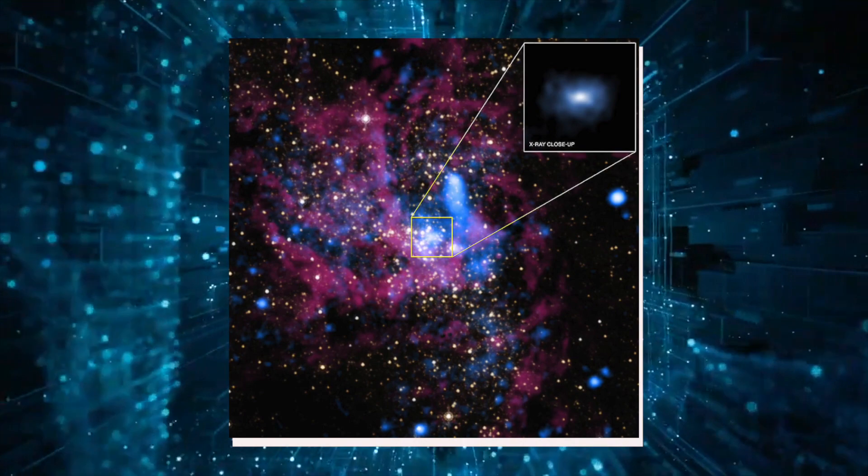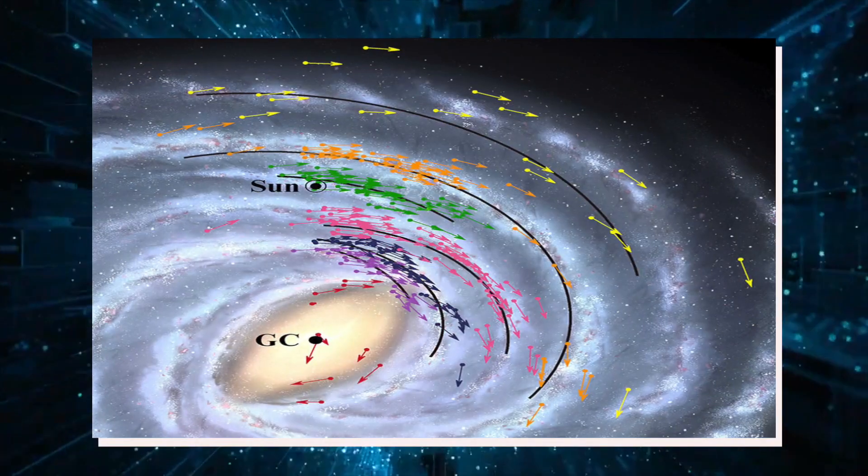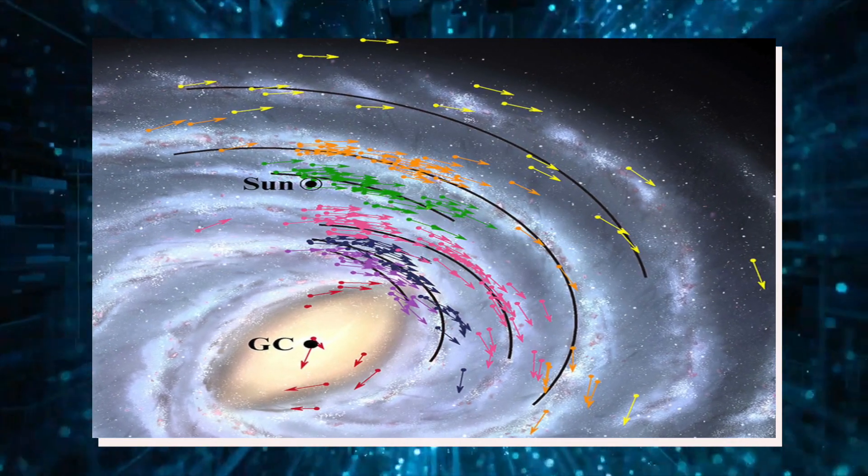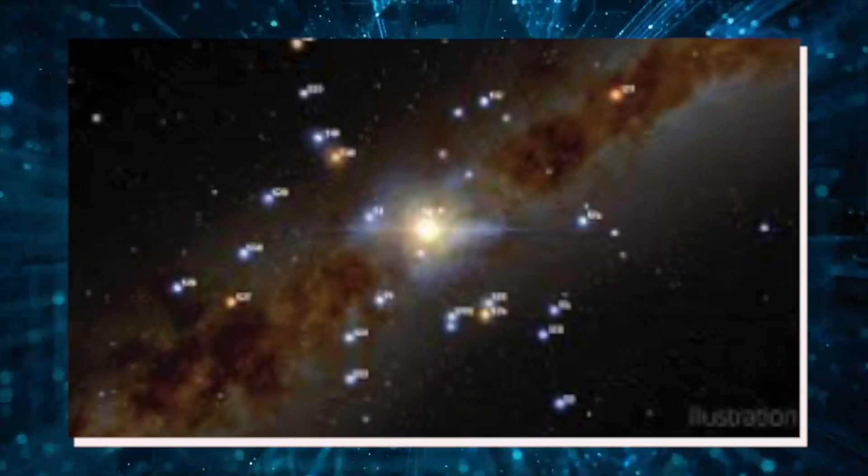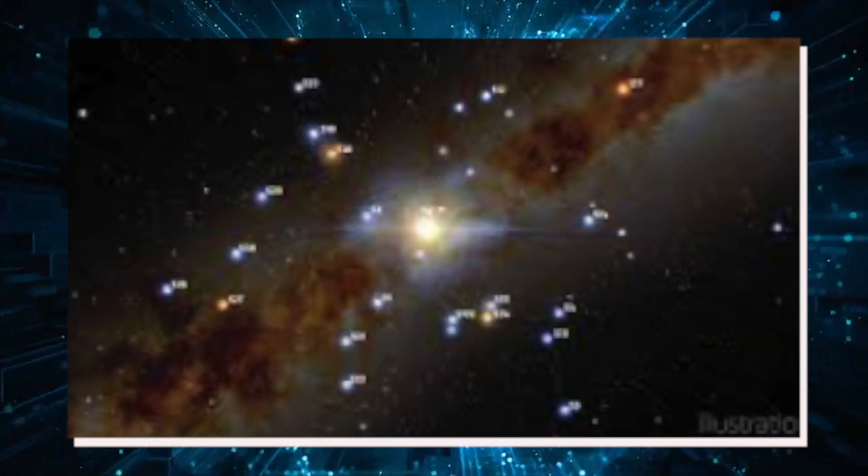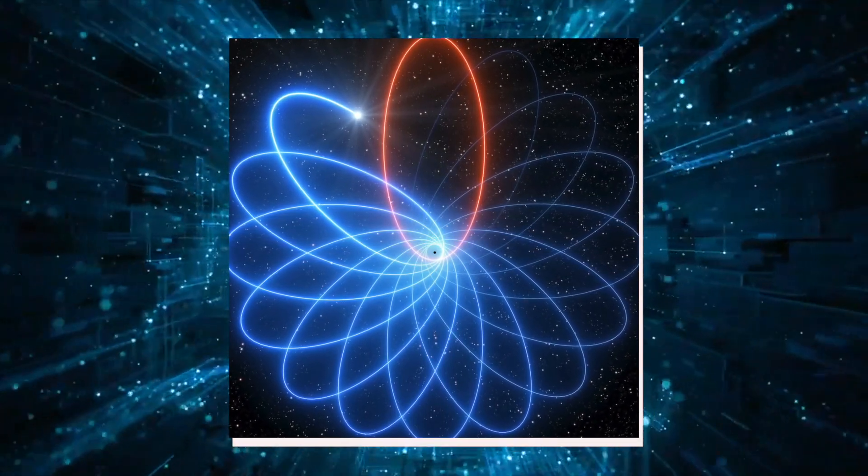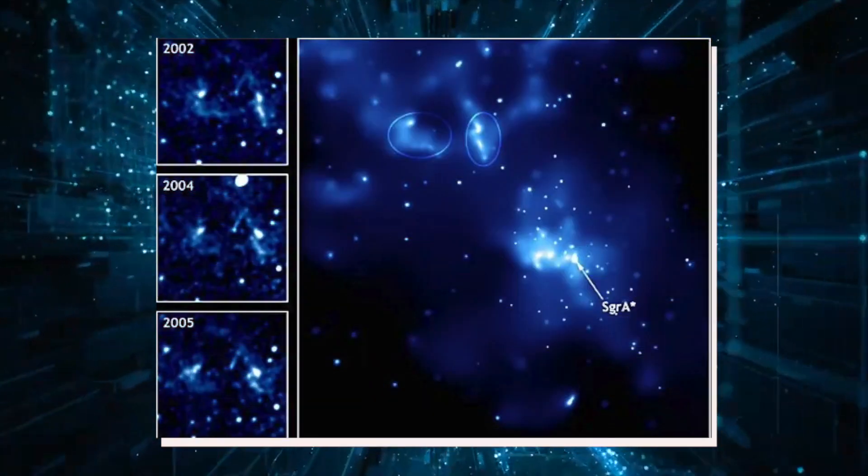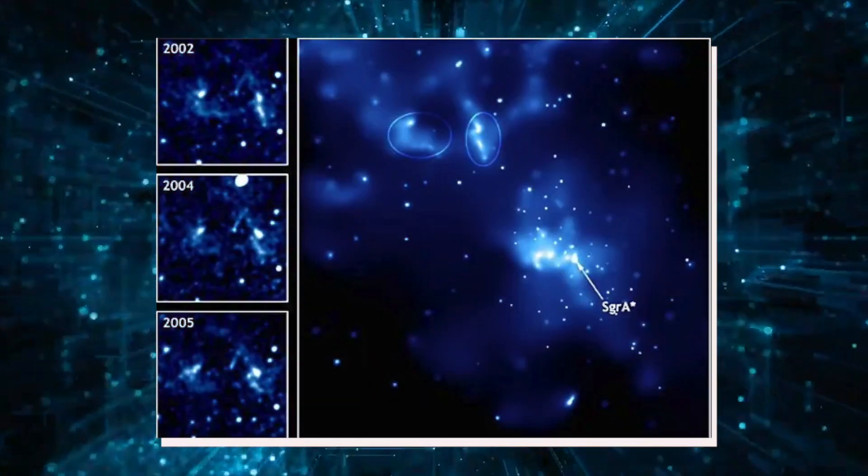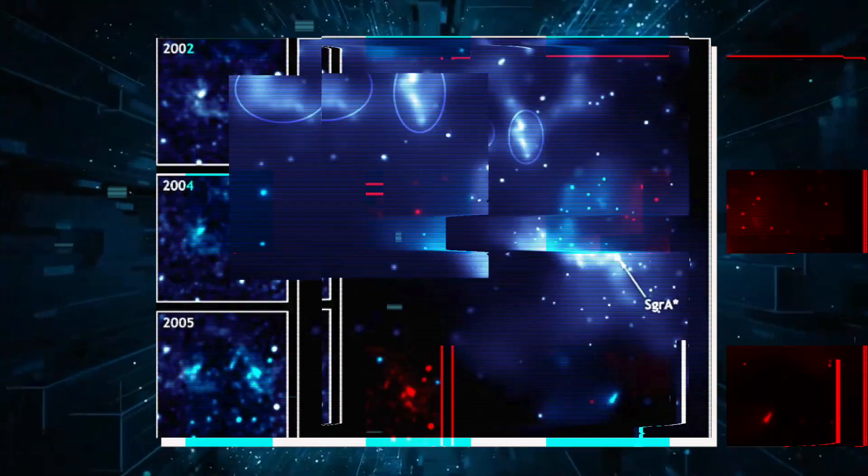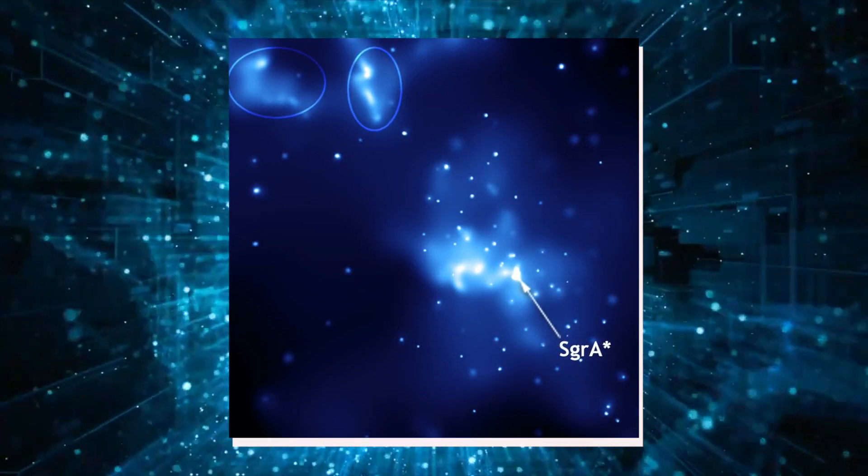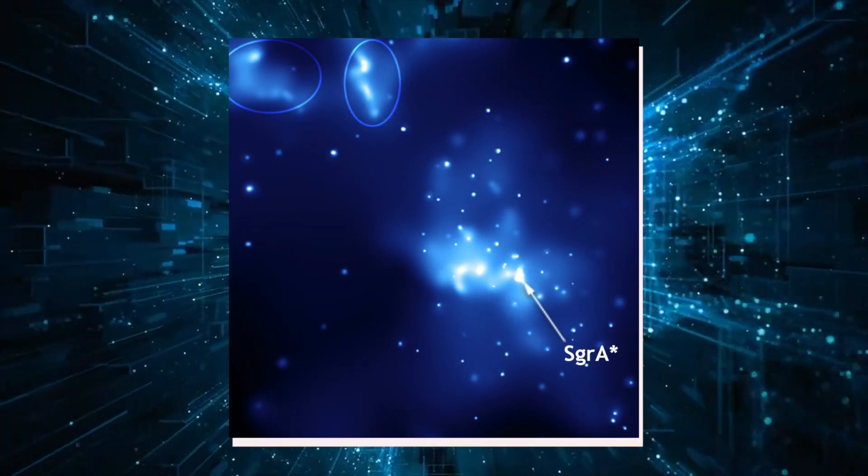The first image of a black hole was captured in 2019 by the Event Horizon Telescope collaboration. The striking photo of the black hole at the center of the M87 galaxy, 55 million light-years from Earth, thrilled scientists around the world. The EHT's image of a black hole in M87 was an extraordinary effort, requiring two years of research, even after the images were taken.